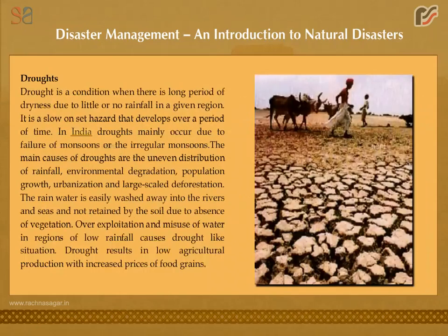A drought is a condition when there is a long period of dryness due to little or no rainfall in a given region. It is a slow onset hazard that develops over a period of time. In India, droughts mainly occur due to failure of monsoons or irregular monsoons.